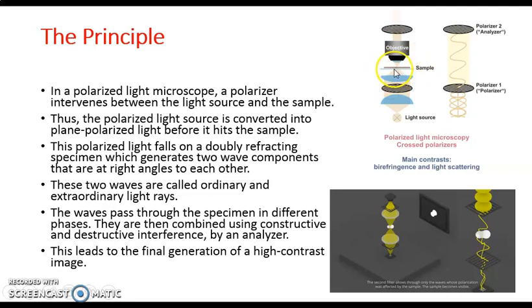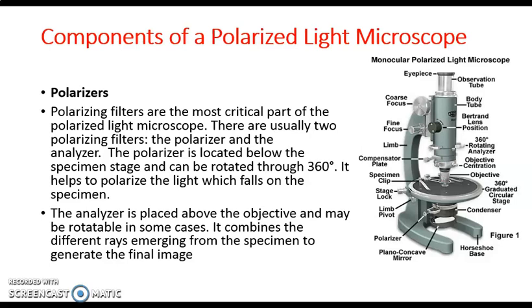The polarizer is the most critical part of the polarized light microscope. There are usually two polarizing filters. One is the polarizer, which is placed below the specimen stage, and this can be rotated at 360 degrees. This helps to polarize the light which falls on the specimen.